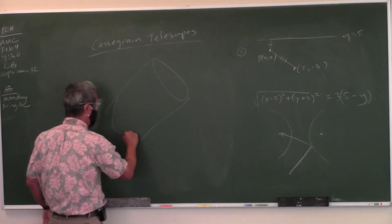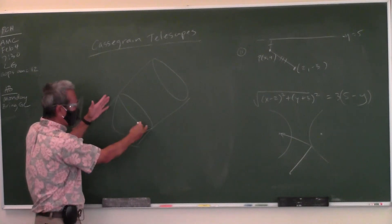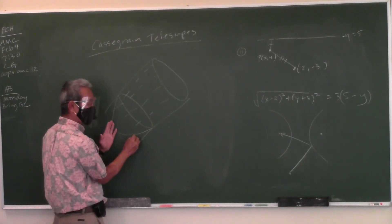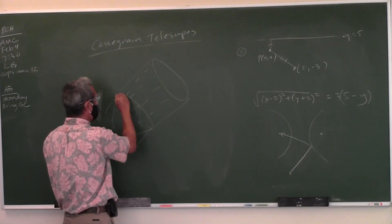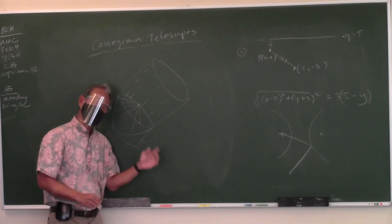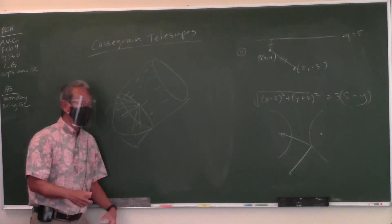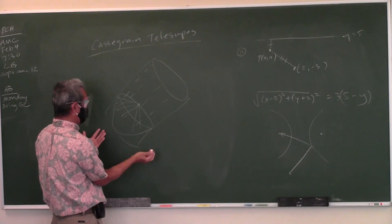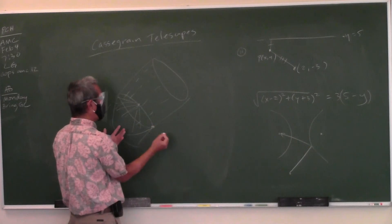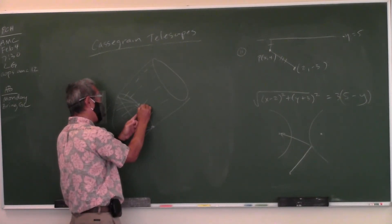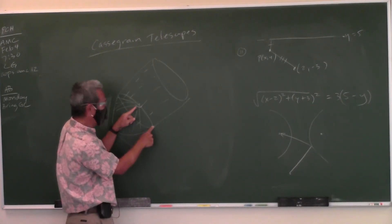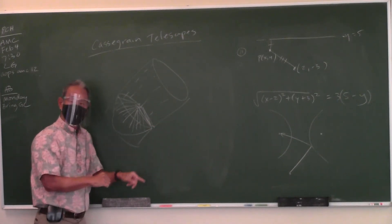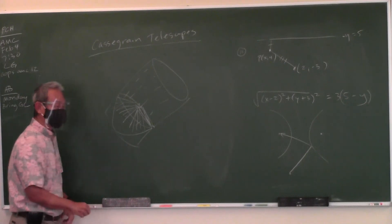In a Cassegrain telescope, light enters a cylinder and hits a large parabolic mirror, which reflects it to the parabola's focus. A small hyperbolic mirror is placed there — that focus is one focus of the hyperbola — and the reflected light travels to the other focus of the hyperbola, where the eyepiece is placed. This is why we study conic sections: they all have practical real-world applications.